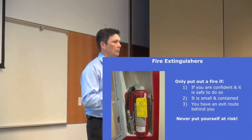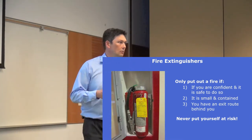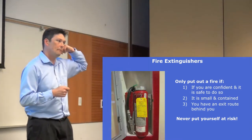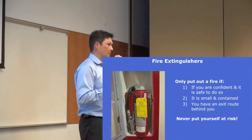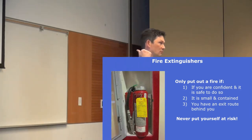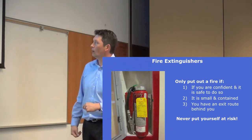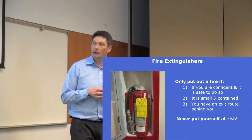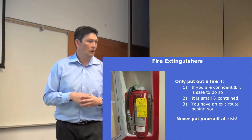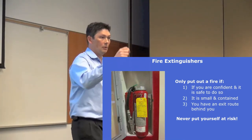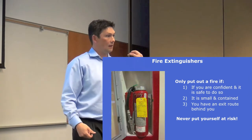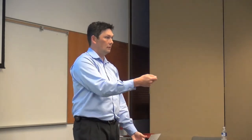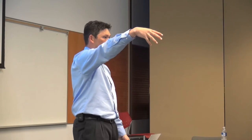When you're ready to use a fire extinguisher, make sure you're safe and confident, the fire is small and contained, and you have an exit route behind you. Never seal yourself off — position yourself at the door facing the fire so you always have an exit route behind you. Use the PASS method: Pull the pin, Aim at the base of the flames — not the middle or above them — Squeeze the trigger, and Sweep the extinguisher at the base of the flames. You only have 12 to 15 seconds, so do it properly. If it's small enough, the fire goes out.